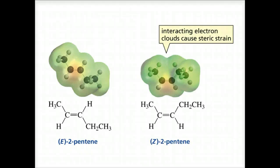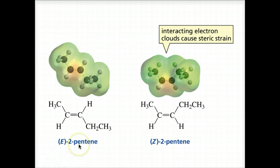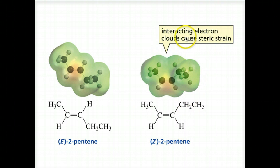Let's continue our discussion of elimination reactions. As you know, alkenes are formed as products. As you can see on the slide, the alkene with the bulkiest groups on the same side of the double bond is less stable because the electron clouds of the large substituents can interfere with each other, causing steric strain. So E2-pentene is more stable of the two illustrated on this slide. Notice these two bulkiest groups are on opposite sides of the double bond, whereas with Z2-pentene, they're on the same side, so they have interacting electron clouds, causing steric strain.